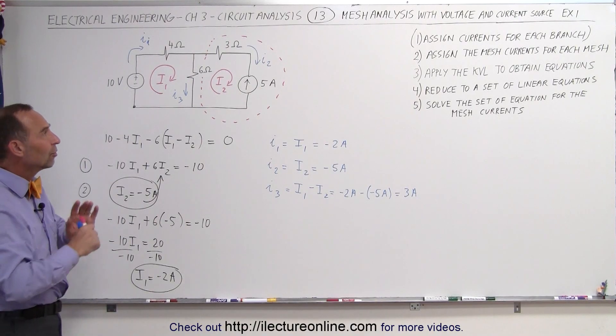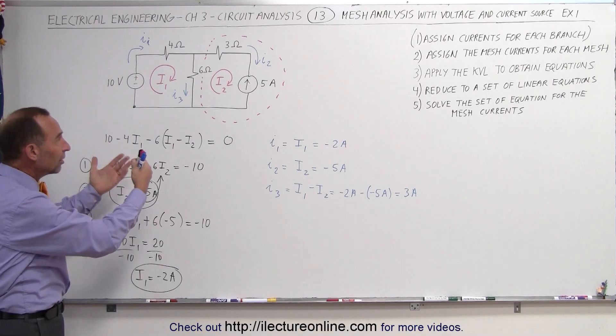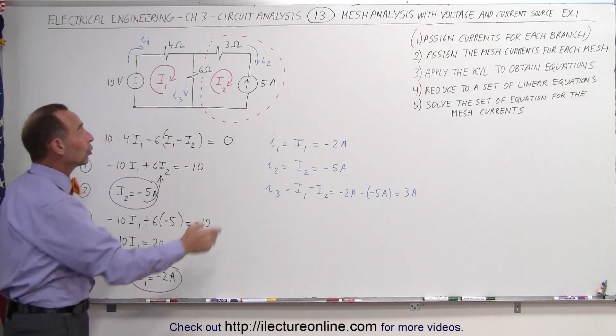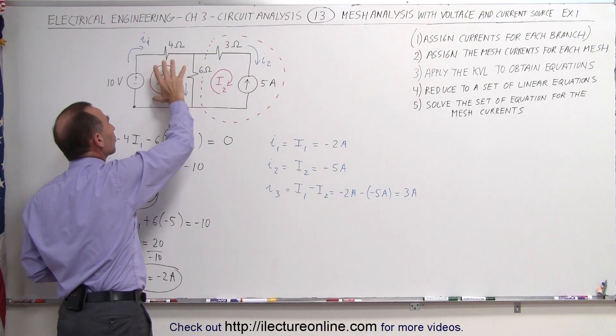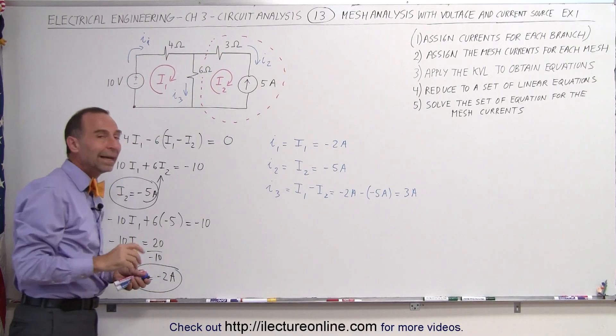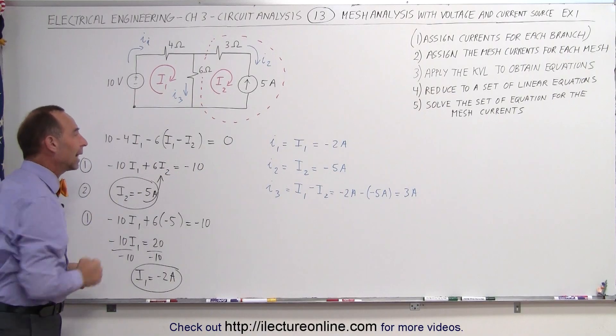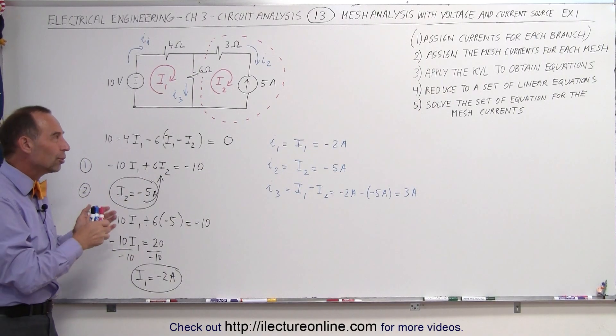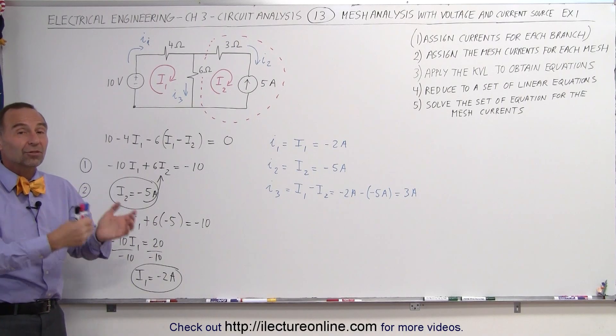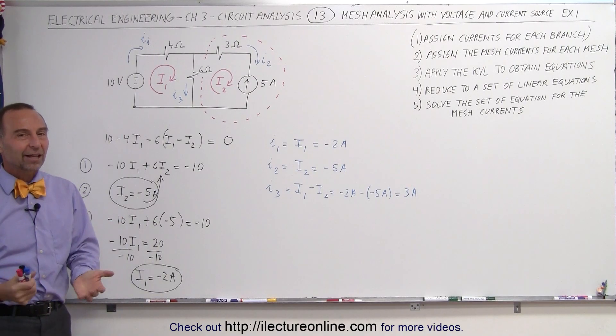Again, anytime you run into a situation where you're trying to use the mesh analysis method but you have a current source, you temporarily remove that current source from the analysis to only use the meshes that only have voltage sources in them, and then you come back and fill in the blanks. This is a simple example, but if you stay tuned, we can show you a more complicated example to see how the method really works. And that's how it's done.